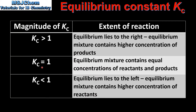If the Kc value is equal to 1, the equilibrium mixture contains equal concentrations of reactants and products. And if the Kc value is less than 1, the equilibrium lies to the left and the equilibrium mixture contains a higher concentration of reactants.